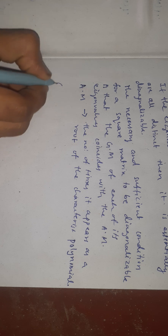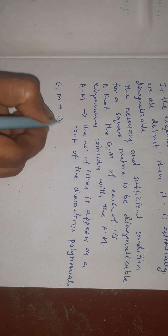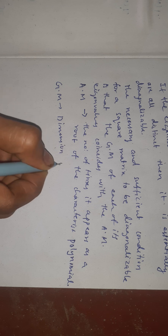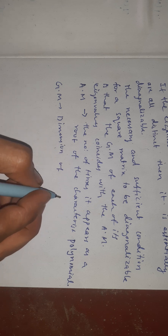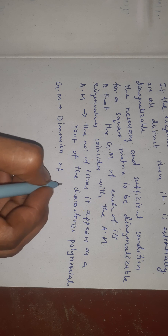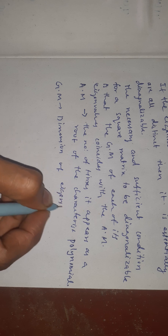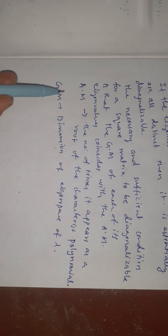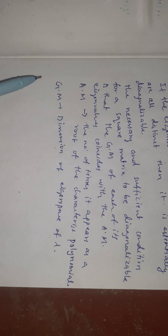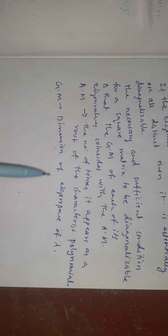The geometric multiplicity is defined to be the dimension of the eigenspace of λ. So: algebraic multiplicity of λ is the number of times it appears as a root of the characteristic polynomial, and geometric multiplicity of λ is the dimension of its eigenspace.